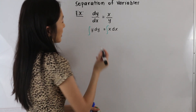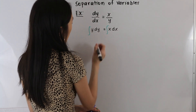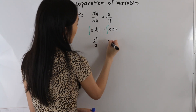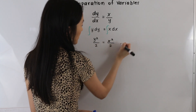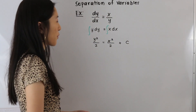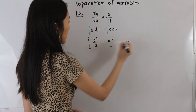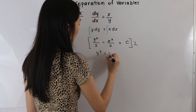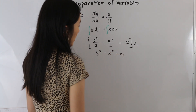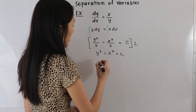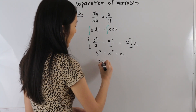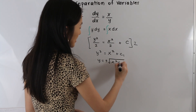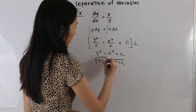The antiderivative of y is just y squared over 2, and the antiderivative of x is just x squared over 2 plus a constant. From here, let's solve for y by multiplying our entire equation by 2, so we end up with y squared is equal to x squared plus some constant. Taking the square root of both sides, on the left we're left with y, and on the right we have plus or minus the square root of x squared plus C. And that is our final answer.